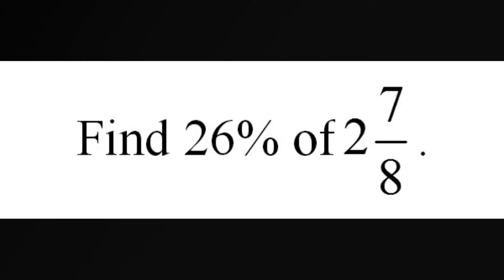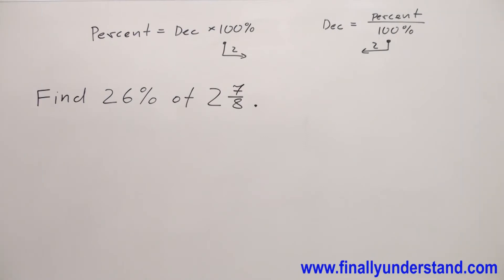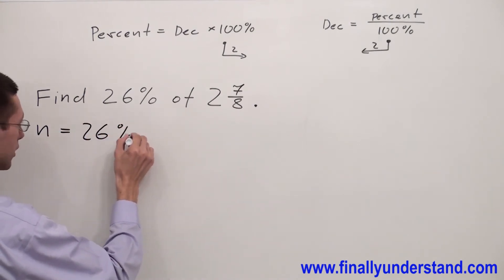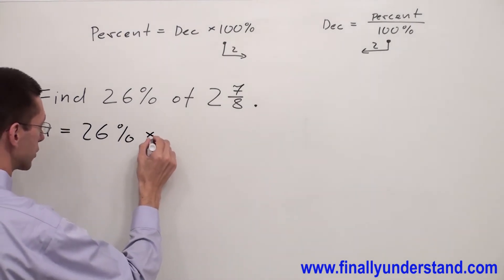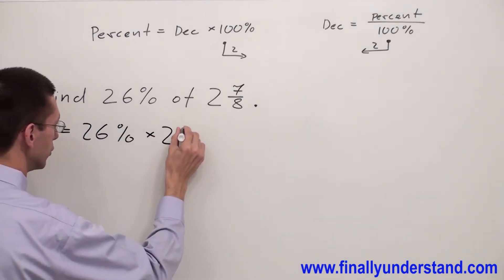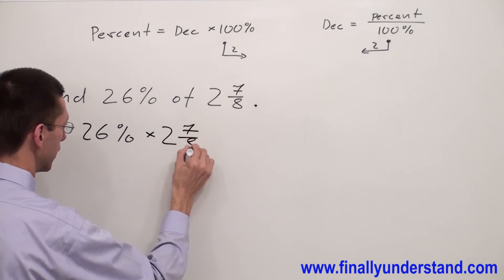Find 26% of two and seven-eighths. Anytime you see the word 'find,' this stands for n equals. I have 26%, 'of' stands for multiplication, and I have two and seven-eighths.